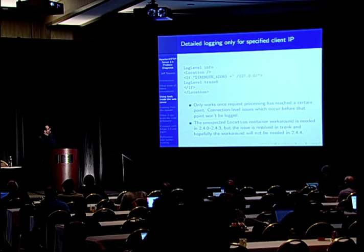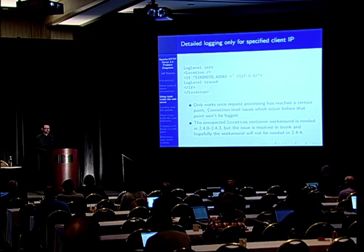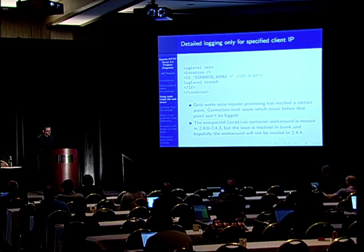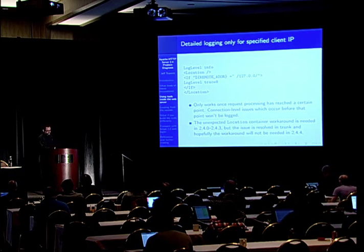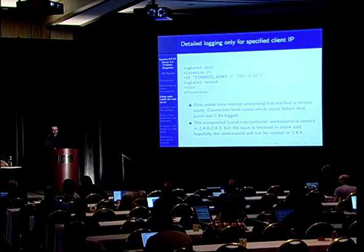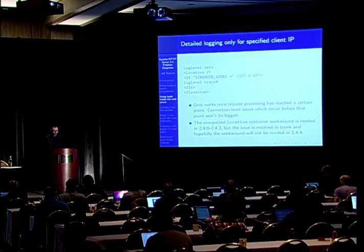Here's a little trick: what if you want to log only for a specified client IP? Globally we have log-level info, and we say if the remote address came from some IPv4 loopback device, then we're going to crank the log level up to trace 8. There's a note about why it has to appear in a location container — Stefan Fritsch fixed that, and it may be simpler with 2.4.4, but it will work at all 2.4 levels.